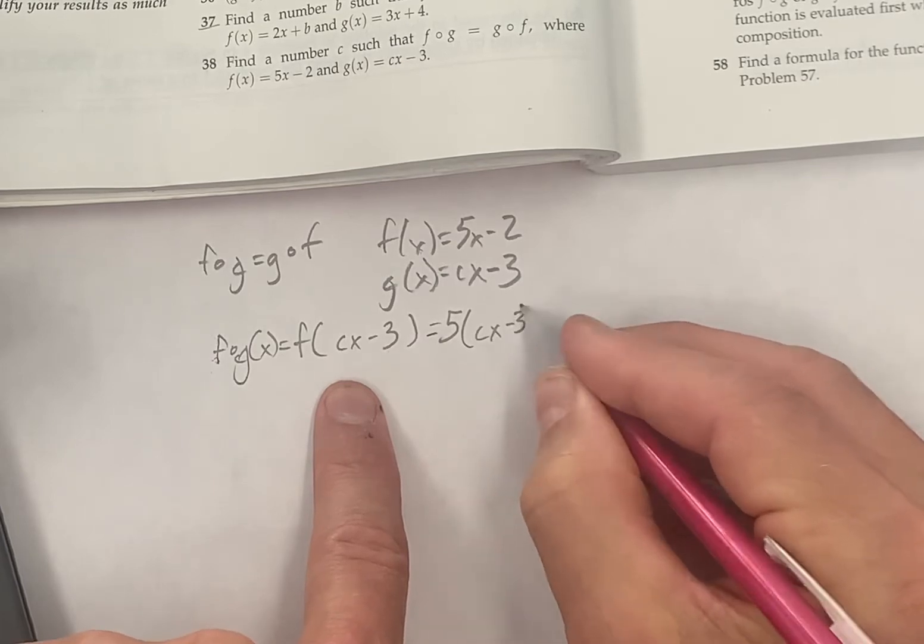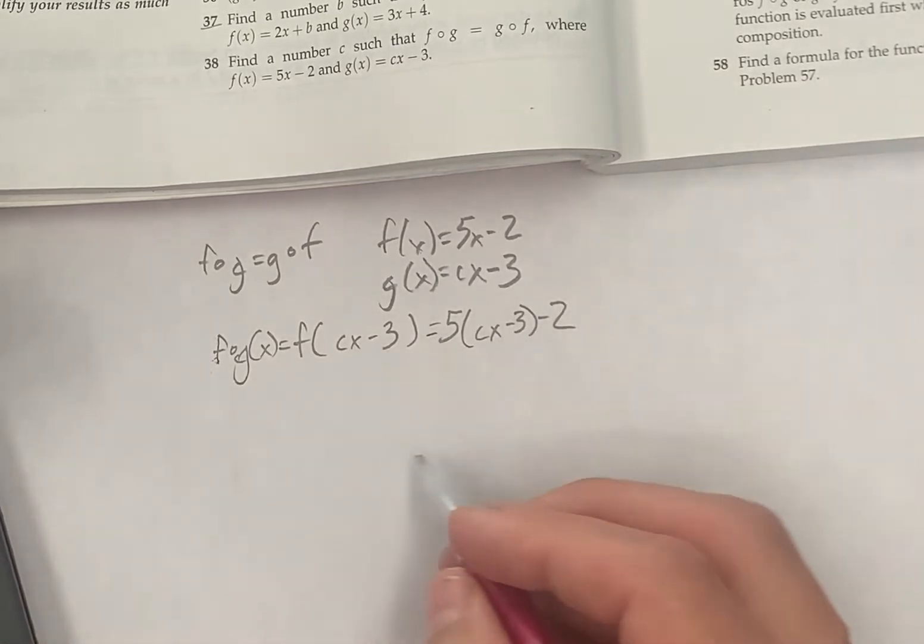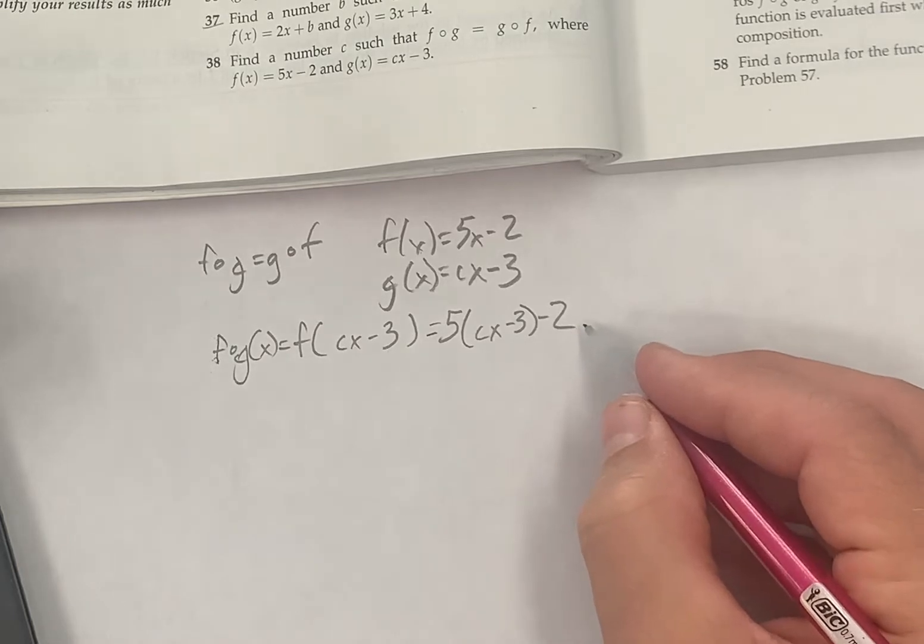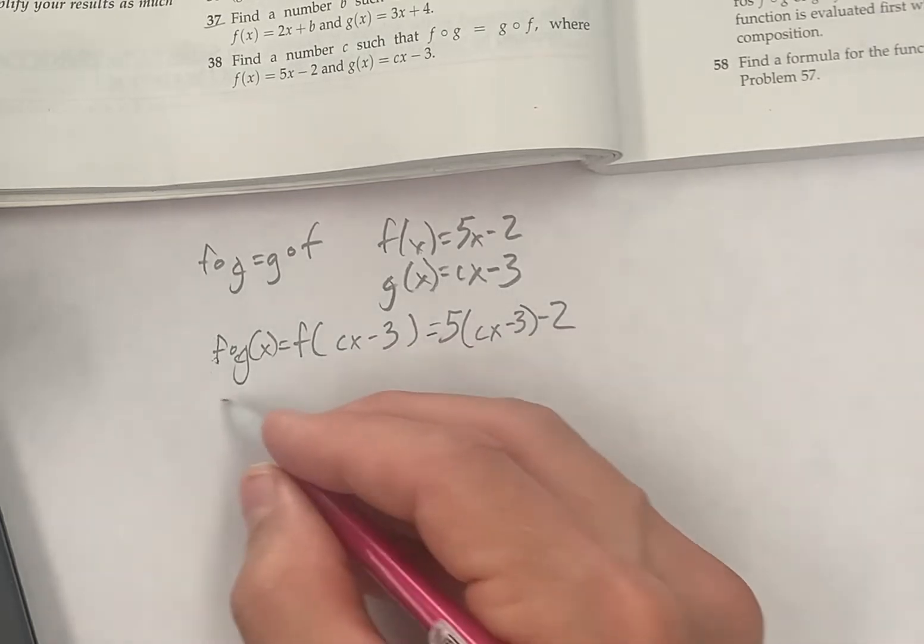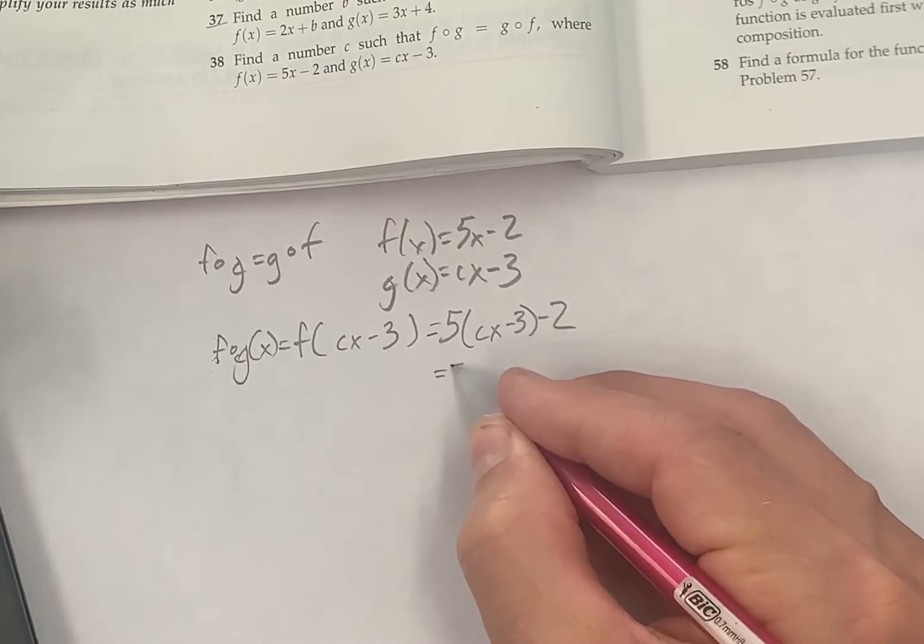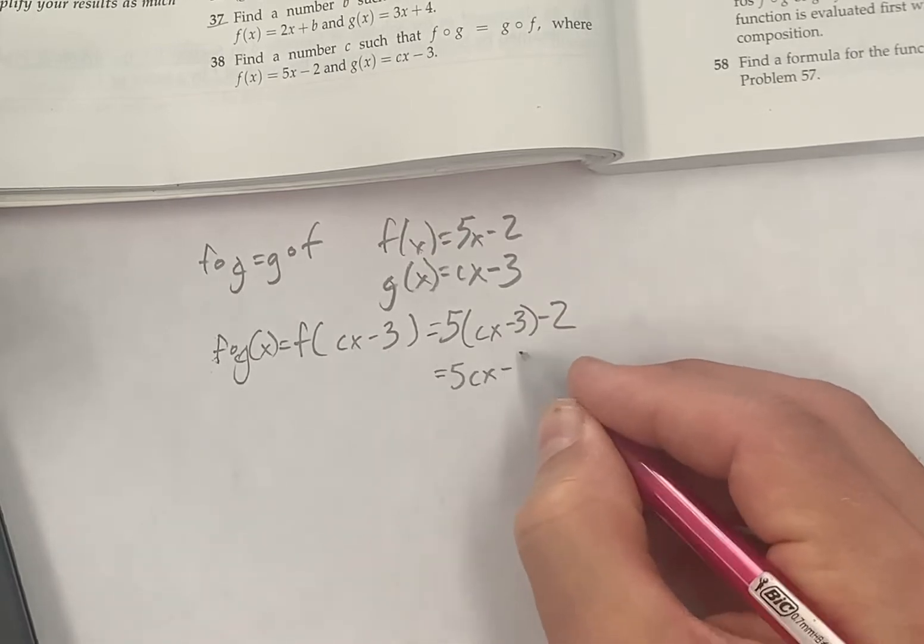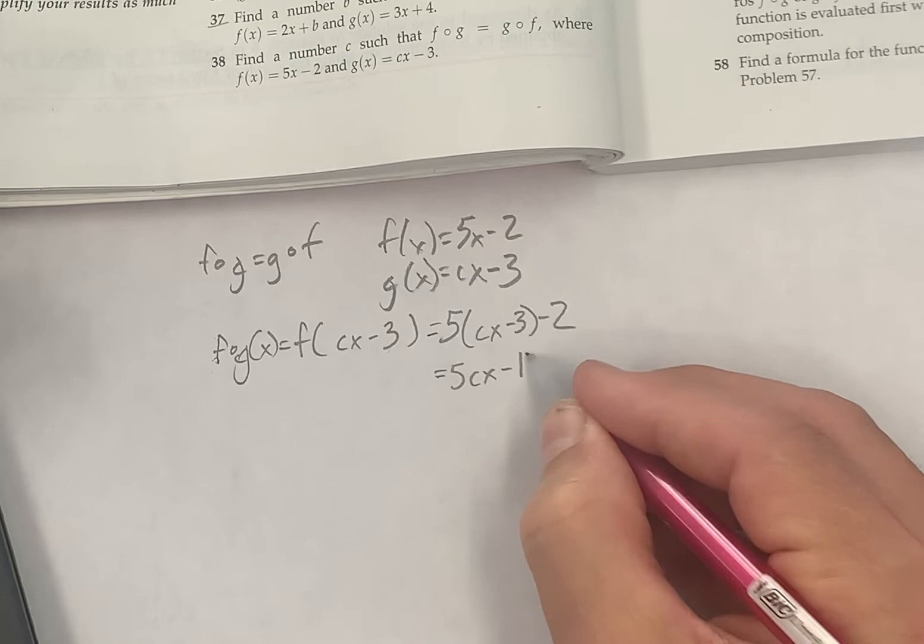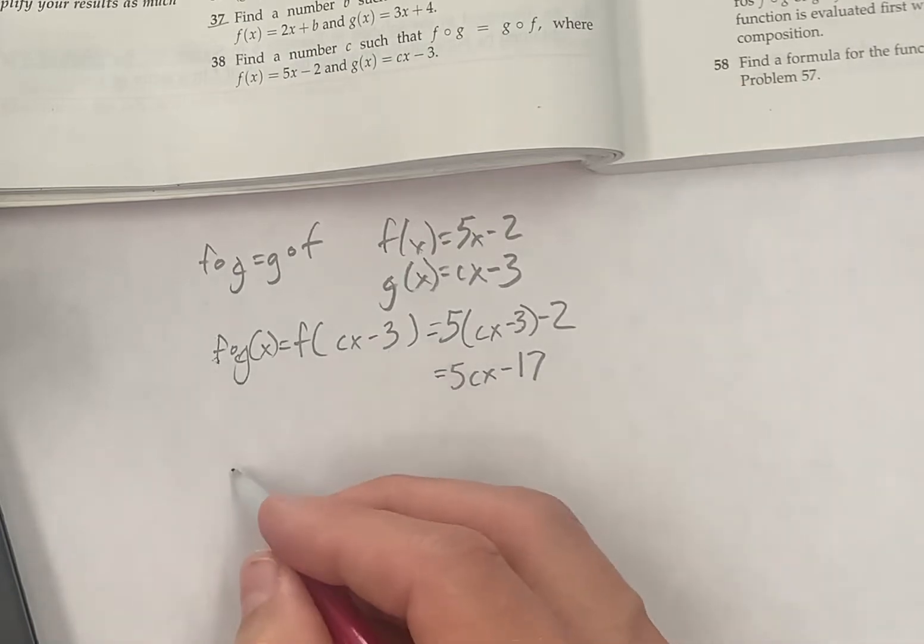cx minus 3 minus 2, and then I guess I could distribute that too if I needed to. So it is 5cx minus 15 minus 2.